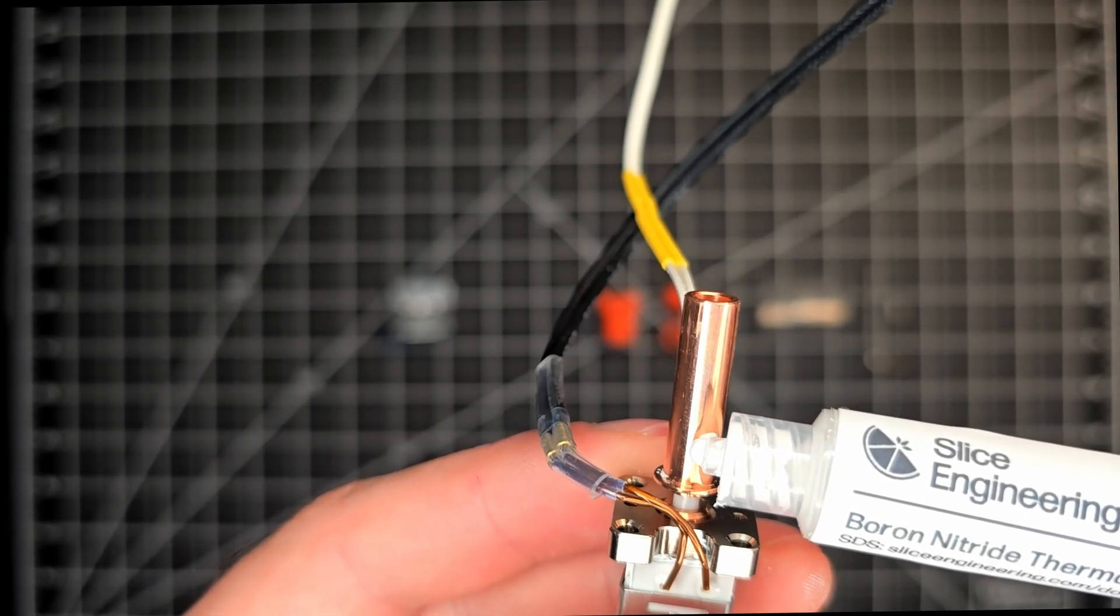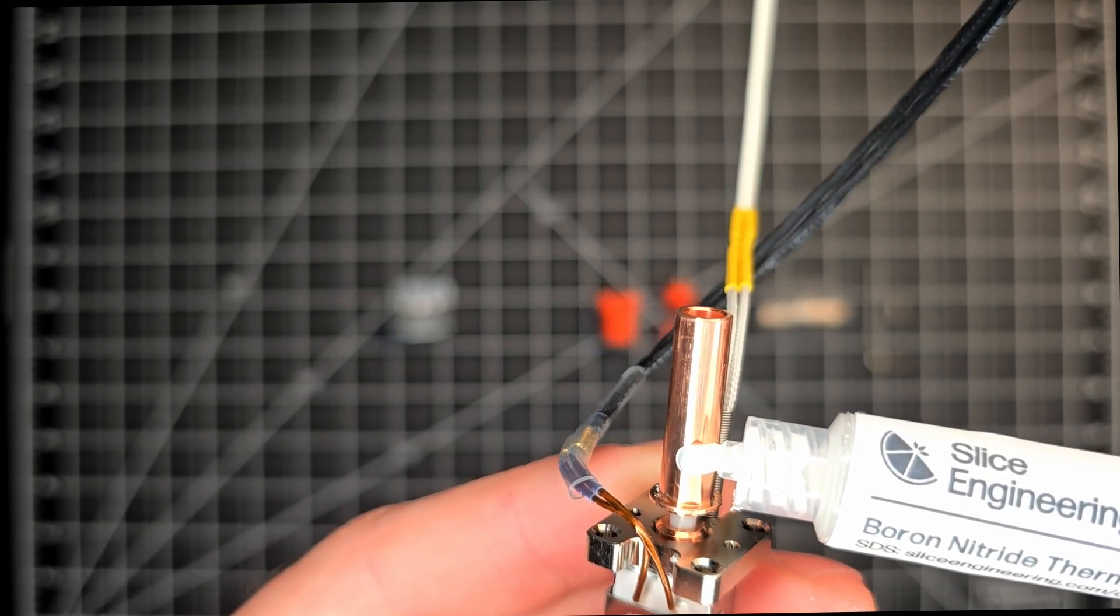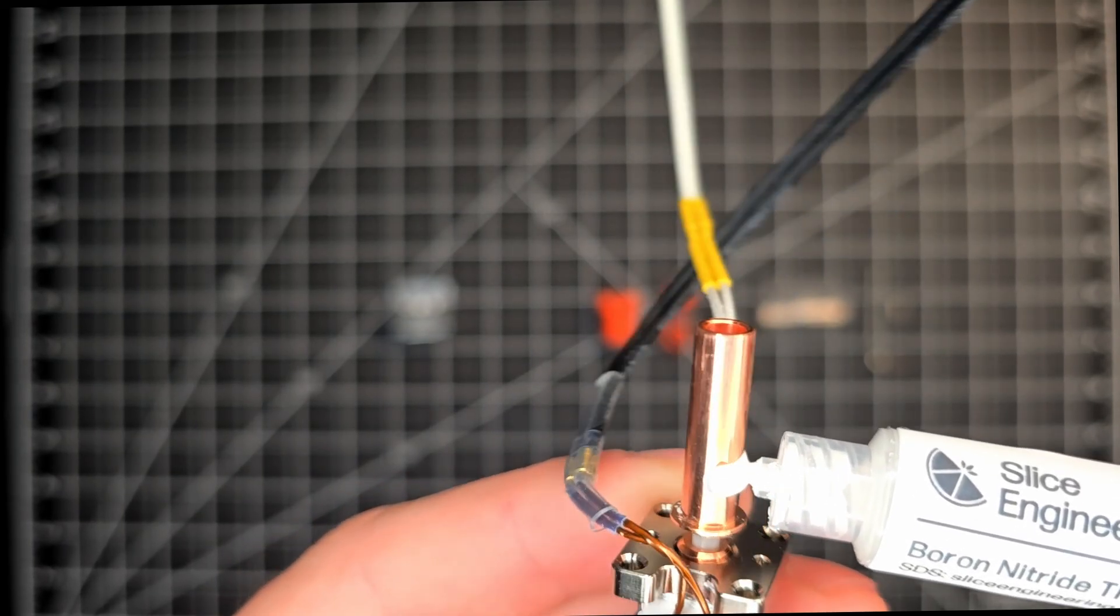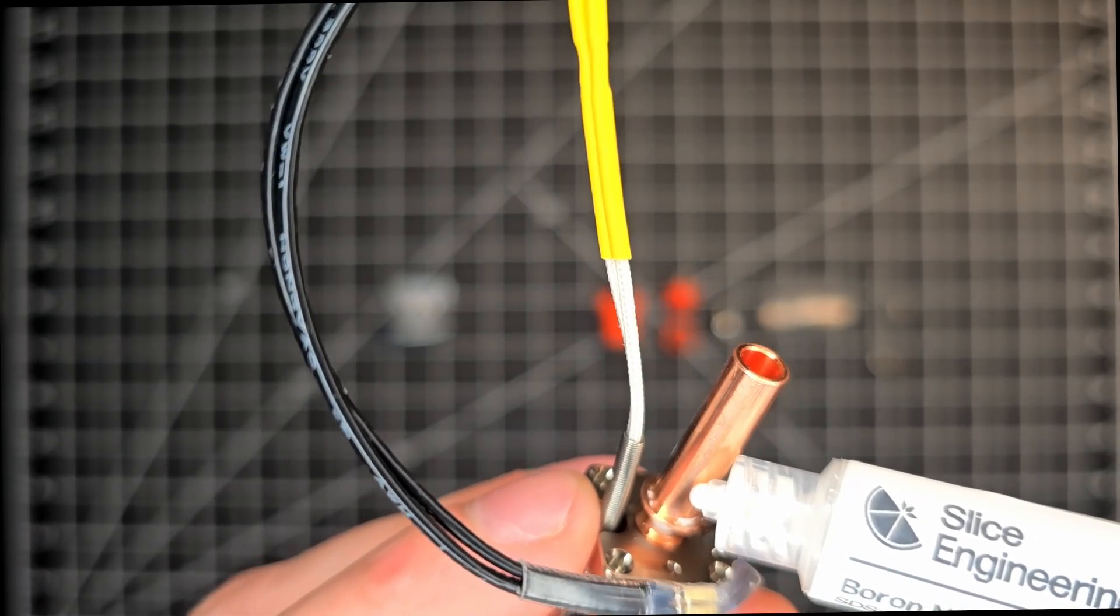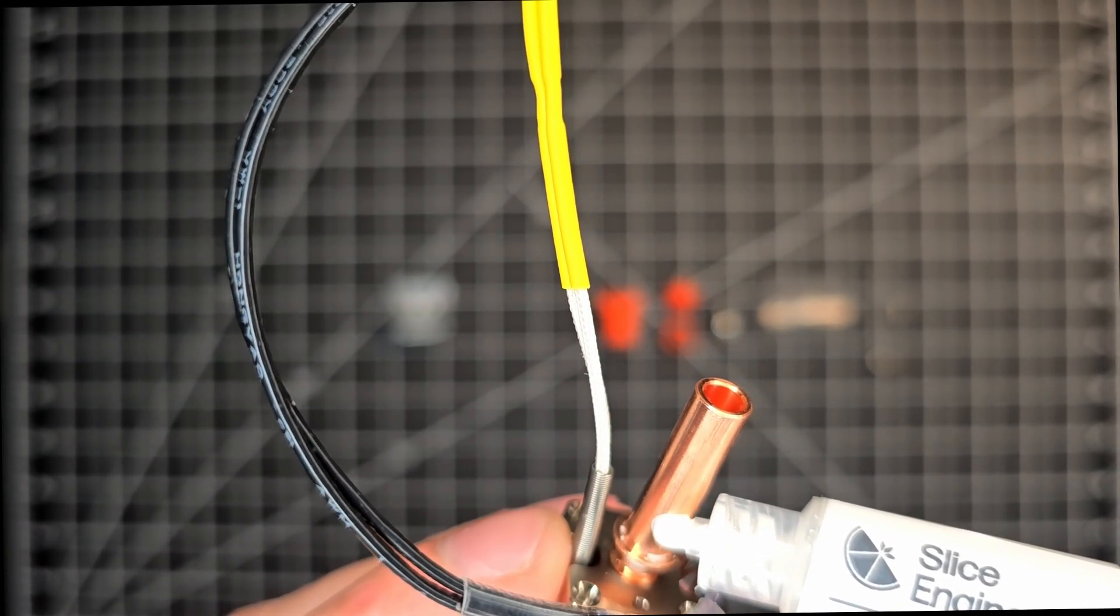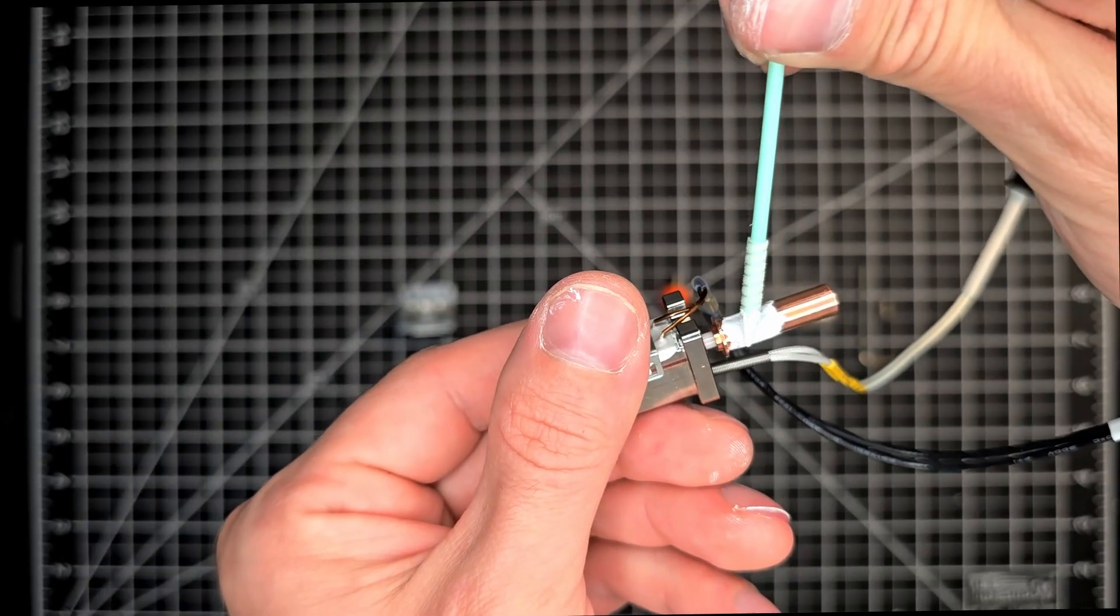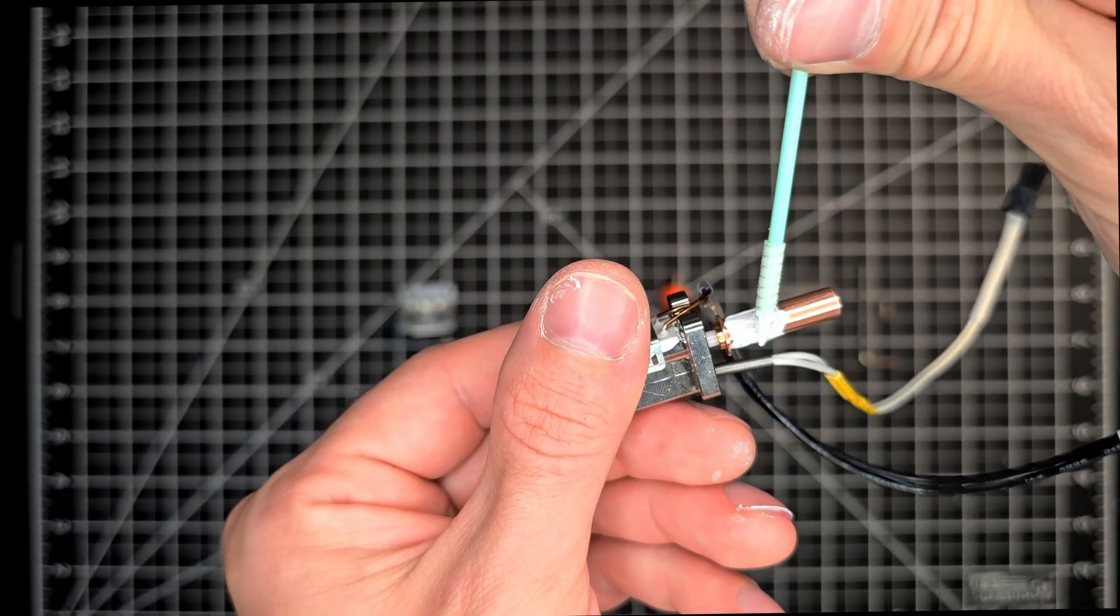And by trying not to repeat our past, we're going to take the boron nitride and apply a few dabs to the lower portion of the heat brake. Within the Slice Engineering bag, there will be some applicators, aka q-tips, that you can use to spread it evenly amongst the bottom portion where the heat sink will sit.